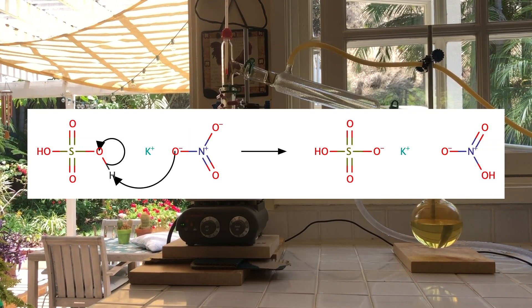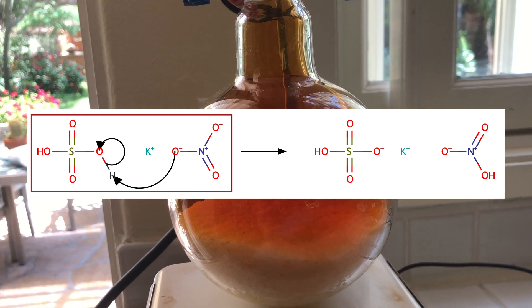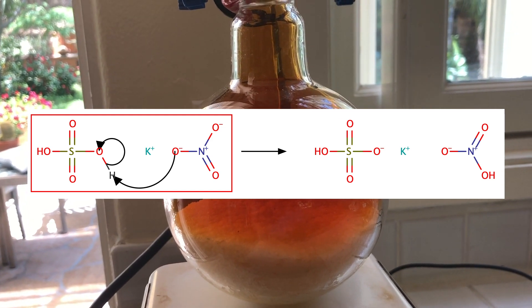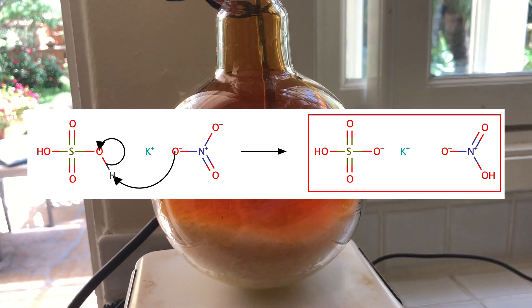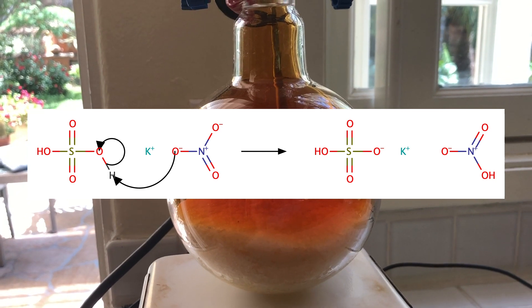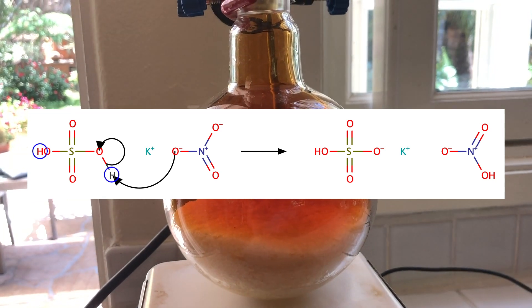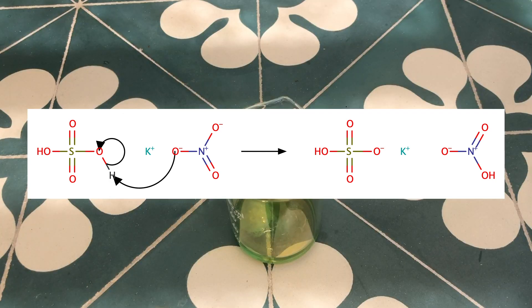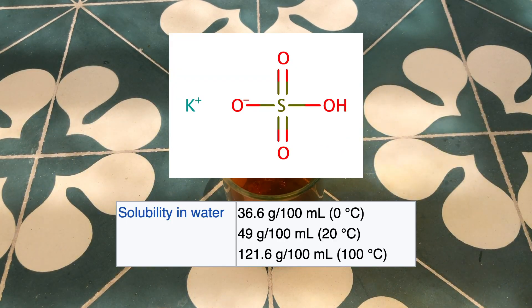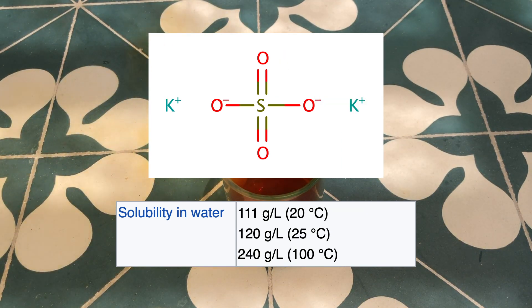This is a very simple reaction. Sulfuric acid donates a proton to the nitrate group, forming nitric acid and potassium bisulfate. Note that the sulfuric acid is diprotic, meaning it has two hydrogens to donate. However, in this reaction we only want to use one of those protons. This is because potassium bisulfate is way more soluble in water, at about 1.2 kg per liter, while water only dissolves 240 grams of potassium sulfate per liter.